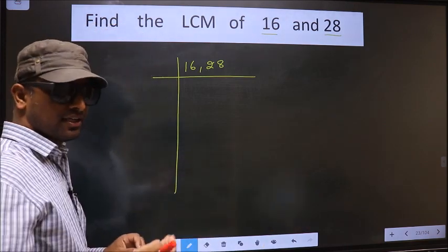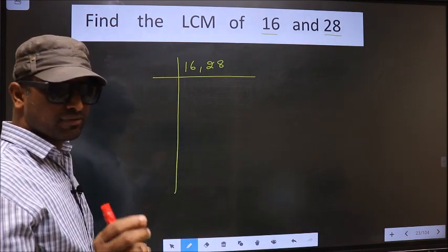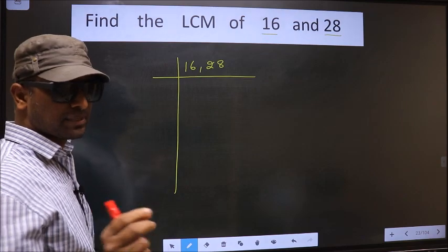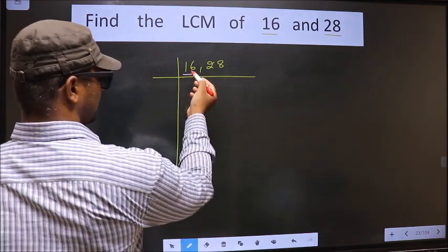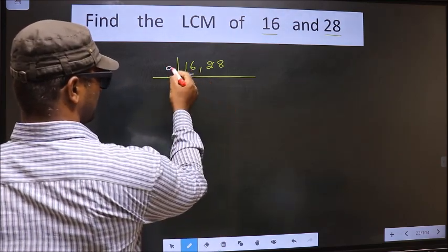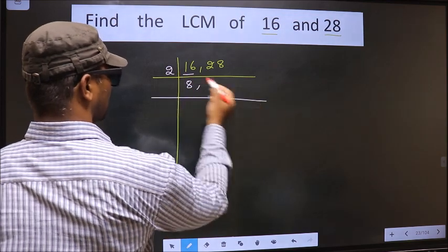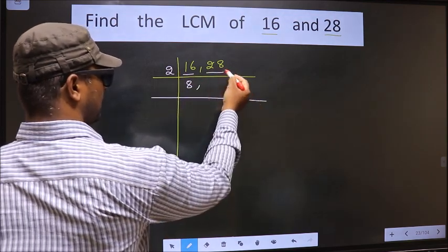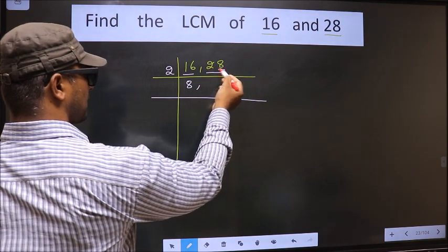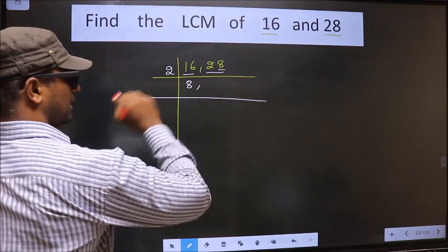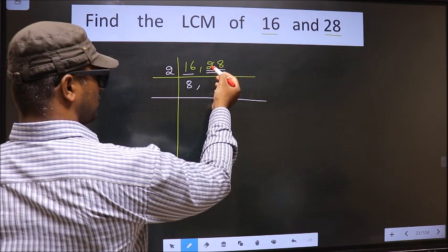Now we should focus on the first number, that is 16. The other number is 28. Last digit 8 — so this number is divisible by 2. The first divisor is 2.